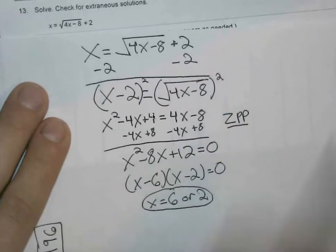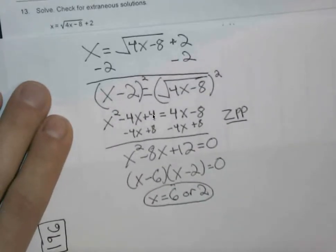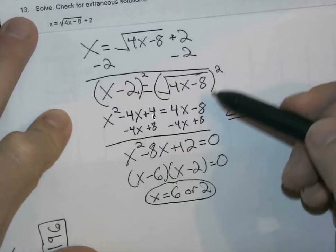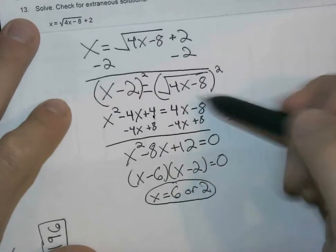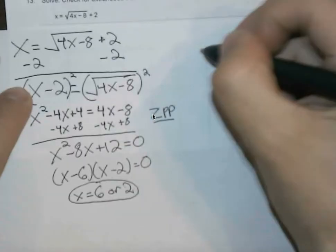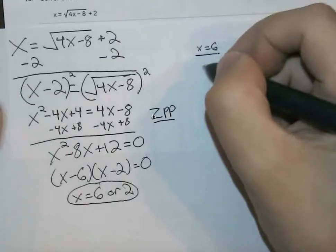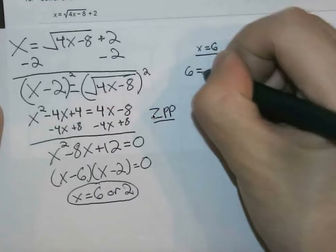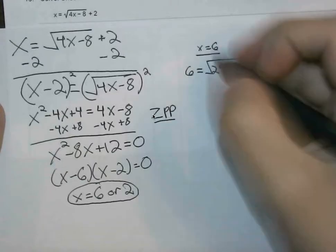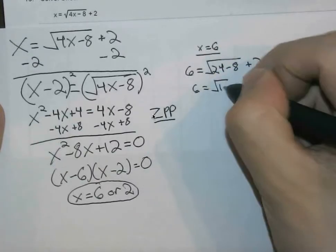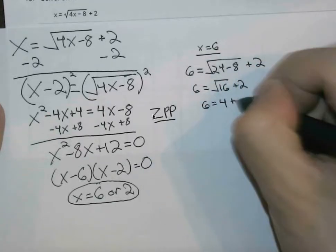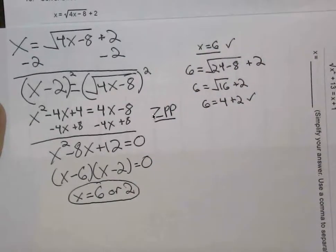So how can we do this? We could plug back in to either one. I'm going to plug back in right here. So I'm going to check where x is 6. I know that way back here, this would have to be 6 equals the square root of 24 minus 8 plus 2. So pretty much 6 equals the square root of 16 plus 2. 6 equals 4 plus 2. This is right. So x is definitely going to be equal to 6.